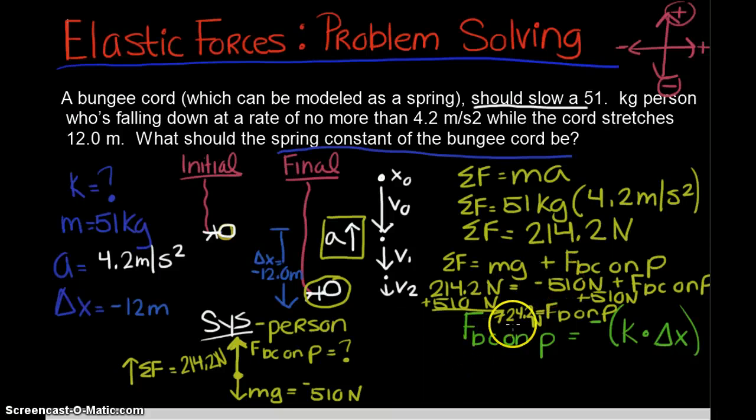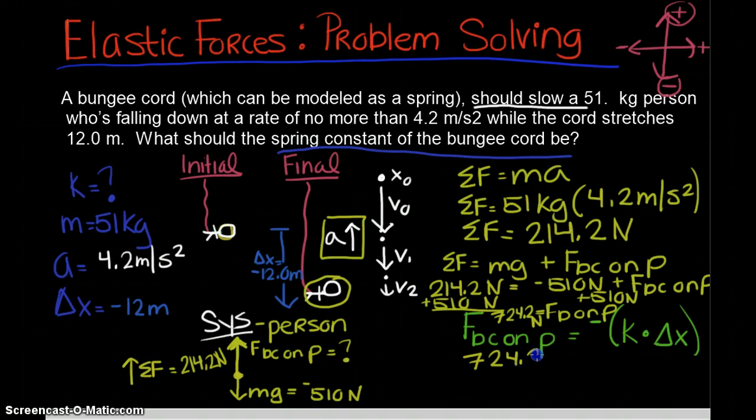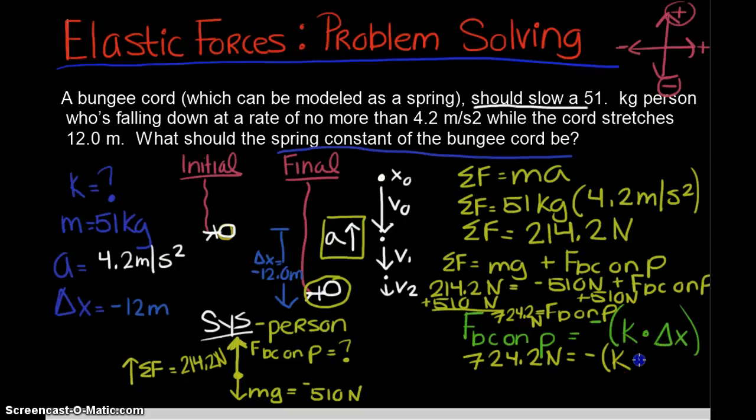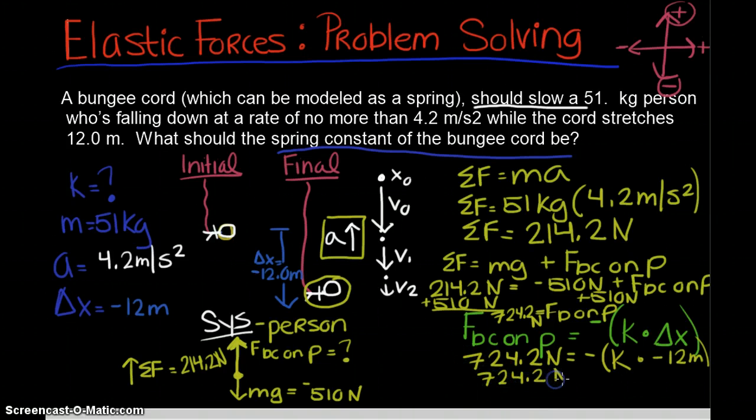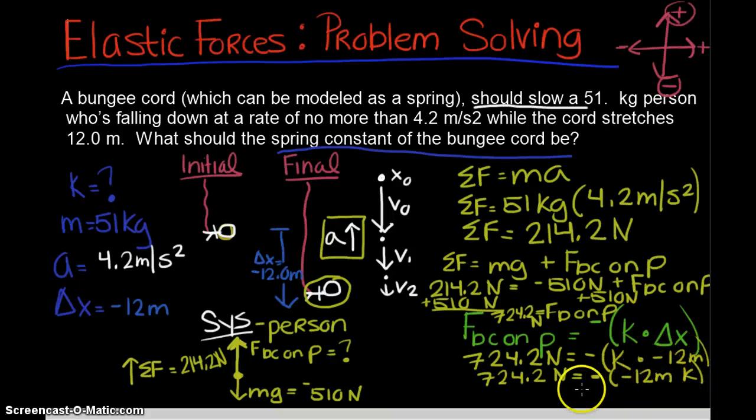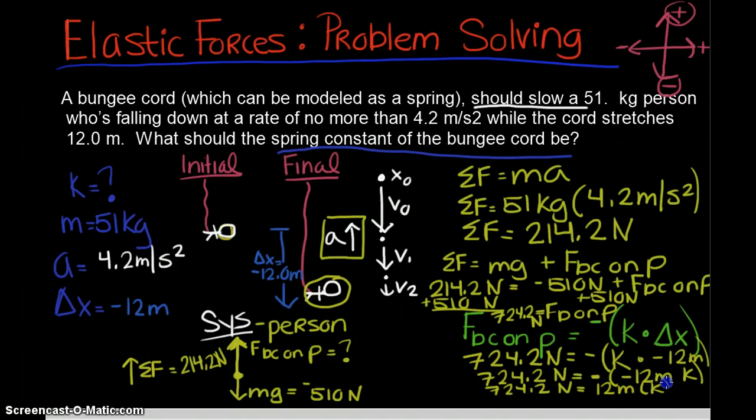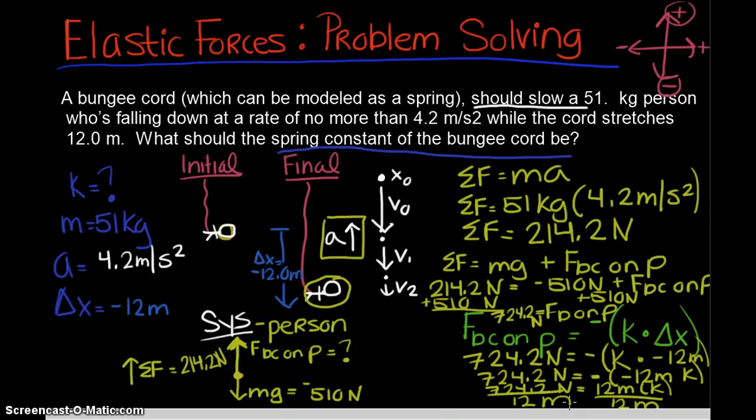Now that I know force of bungee cord on the person, I can use this to find the spring constant k. Remember this displacement of the spring is downward or in the negative direction, so I have k times negative 12 meters. Here's our elastic force, k times negative 12 meters, and this equals 724.2 newtons. To get k by itself we'll divide both sides by 12 meters.